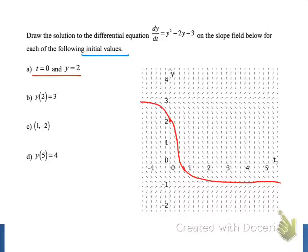For our second example, our initial value is written slightly differently, but contains the same type of information. Our initial value is y of 2 equals 3, which means the input t is equal to 2 and the output y is equal to 3. So we plot a point there in blue at the point 2, 3.